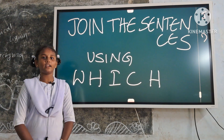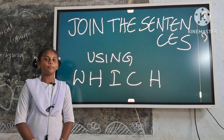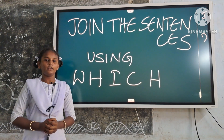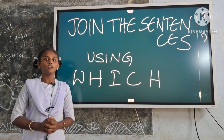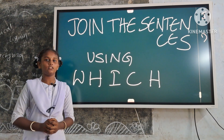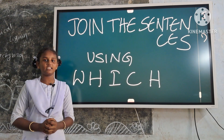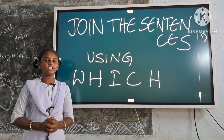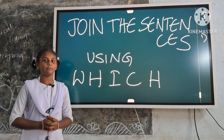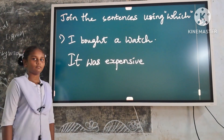First, identify the noun phrase of things in the first sentence. Next, identify related pronouns such as it, them, they in the second sentence. Next, round off related pronouns in the second sentence. Next, replace it with which. Next, keep which at the beginning of the second sentence. Next, keep the entire second sentence in the bracket. Next, keep the entire second sentence beside the identified noun phrase of things.